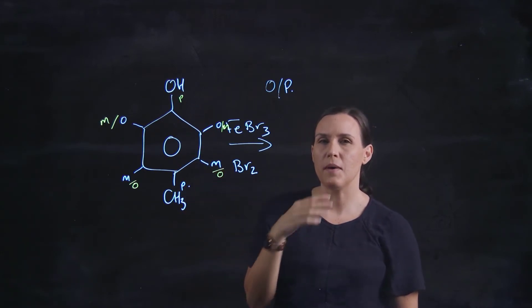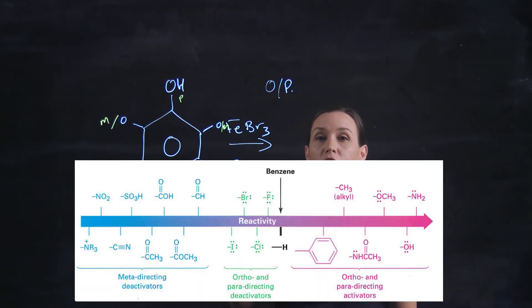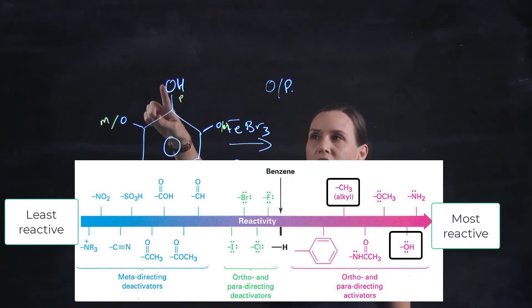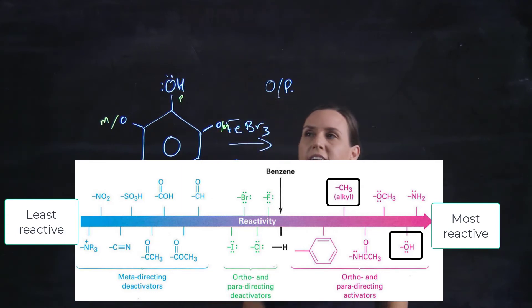So what we need to think about is which one is the strongest ortho para director or which one is going to increase the reactivity of the reaction the greatest. OH has two lone pairs on that oxygen and it will actually influence that system of the benzene ring and the delocalized electrons more than the methyl that doesn't have any lone pairs attached to it. So the OH has the greater reactivity.